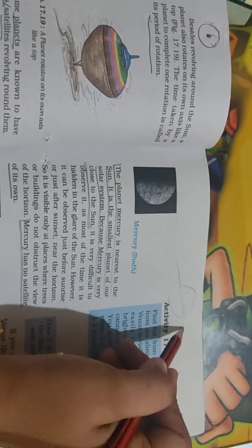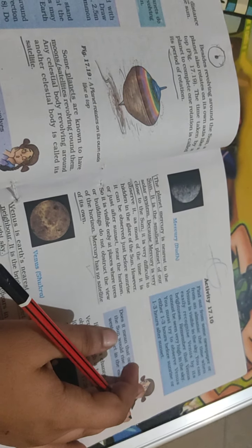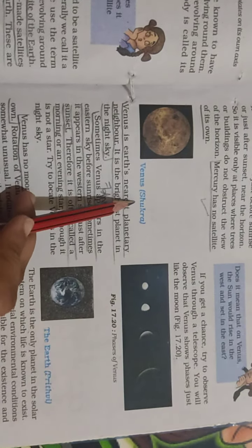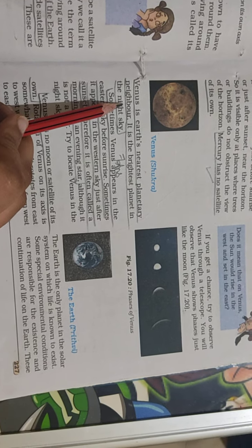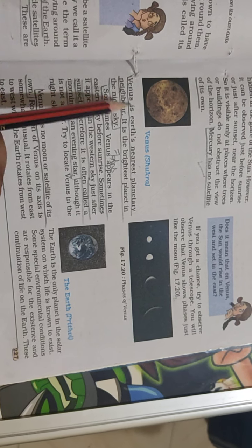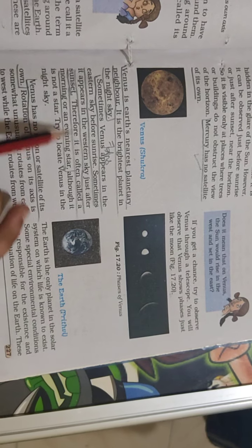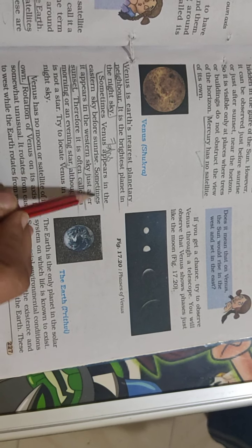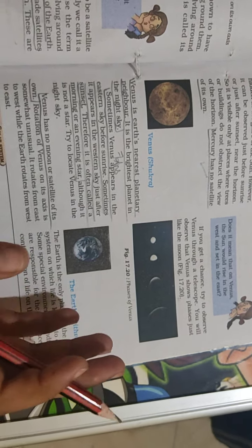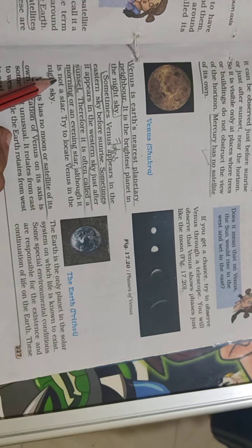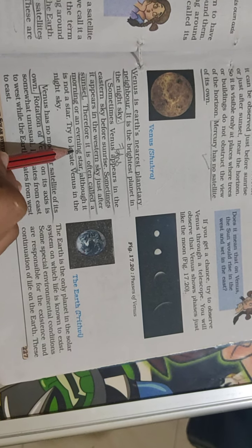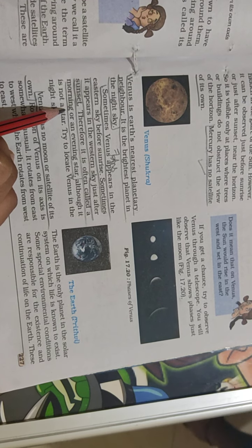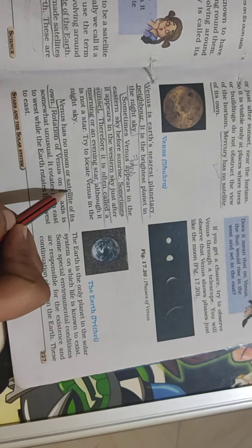Next is Venus. Venus is Earth's nearest planetary neighbor and the brightest planet. Sometimes Venus appears in the eastern sky before sunrise, and sometimes in the western sky after sunset. Therefore, it is often called the morning or evening star. Venus has no moon or satellite.